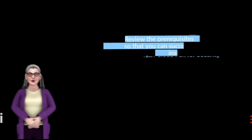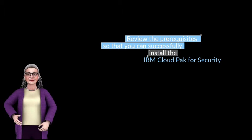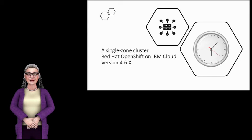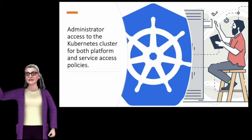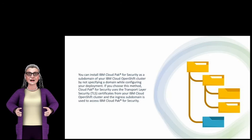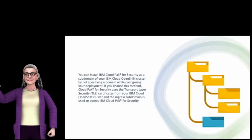Before you begin, review the prerequisites so that you can successfully install IBM Cloud Pak for Security. You will need a single zone cluster running Red Hat OpenShift on IBM Cloud version 4.6.x, and administrator access to the Kubernetes cluster for both platform and service access policies. You can install IBM Cloud Pak for Security as a subdomain of your IBM Cloud OpenShift cluster by not specifying a domain while configuring your deployment.